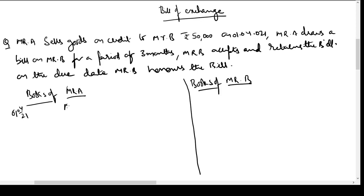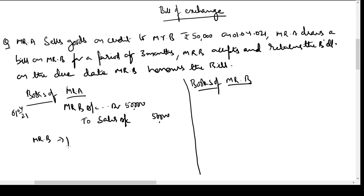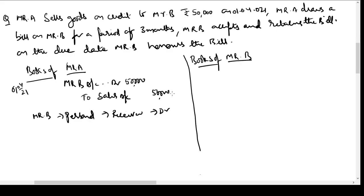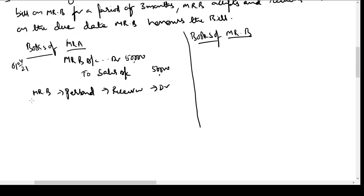On 1st April 2021, in the books of Mr A, we pass the entry: Mr B Account Debit rupees 50,000, To Sales Account. The logic: Mr B is a personal account — receiver of goods, debit. He owes money to Mr A, that is why he is shown as a debtor. Sales is income for the business — nominal account, incomes and gains, credit.